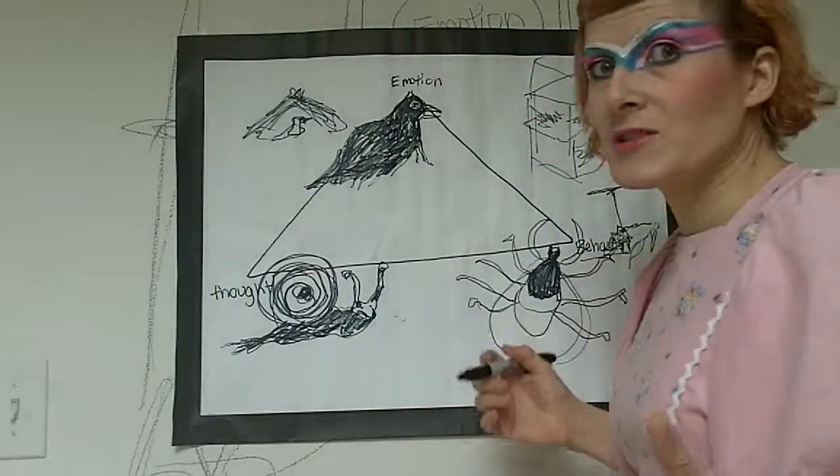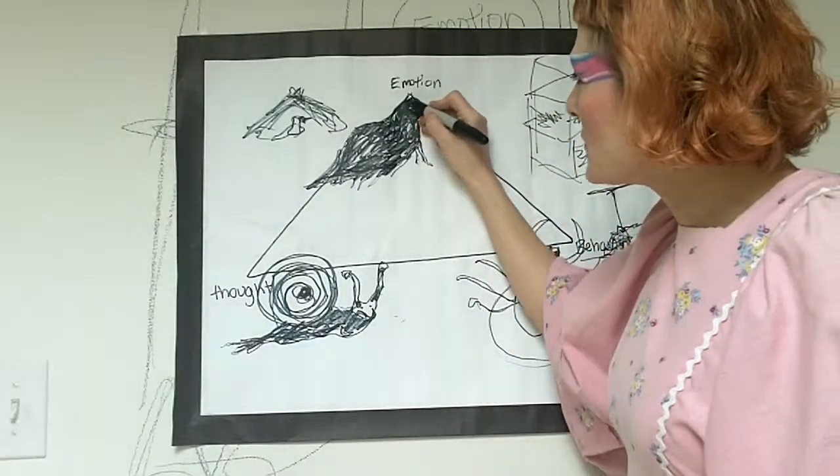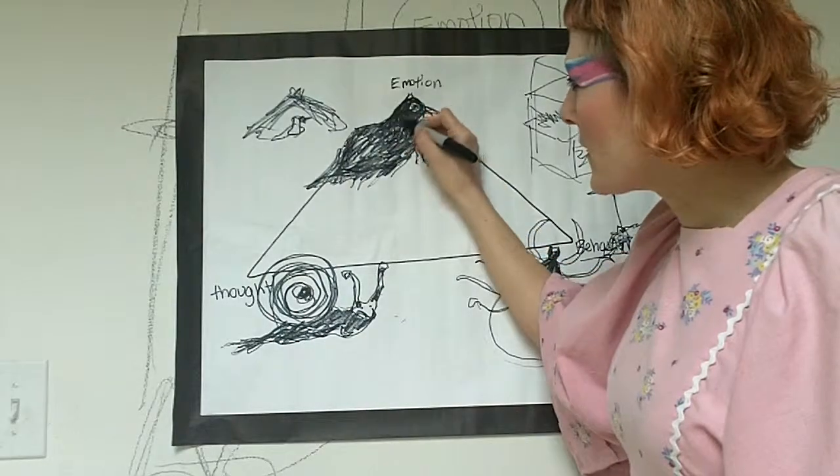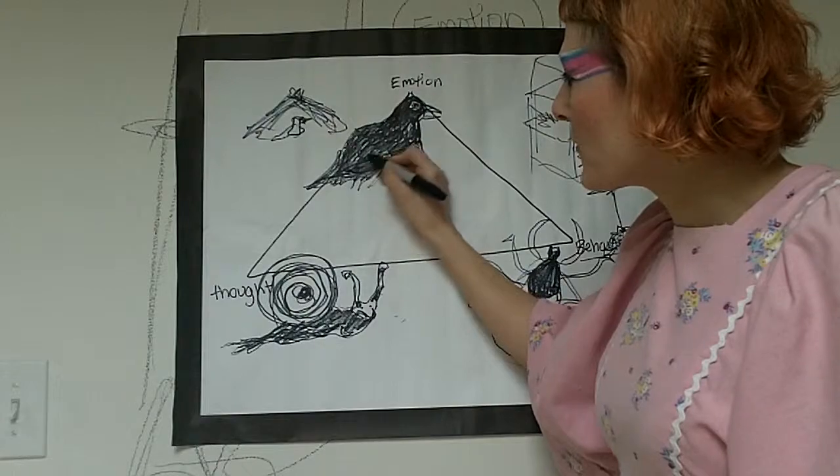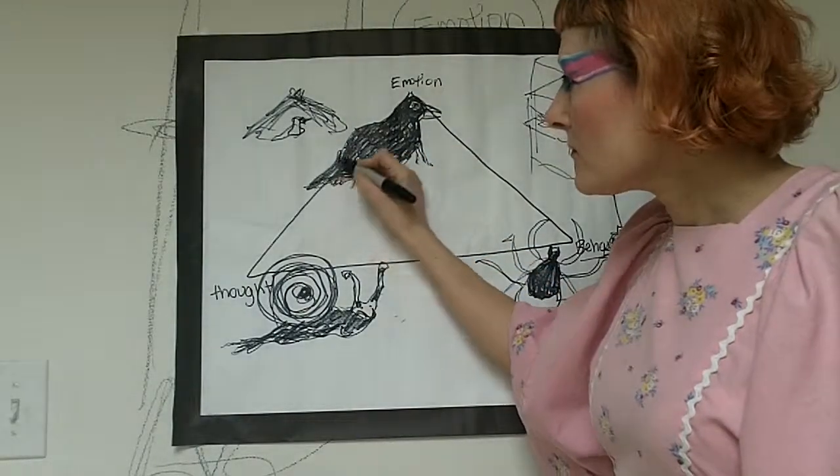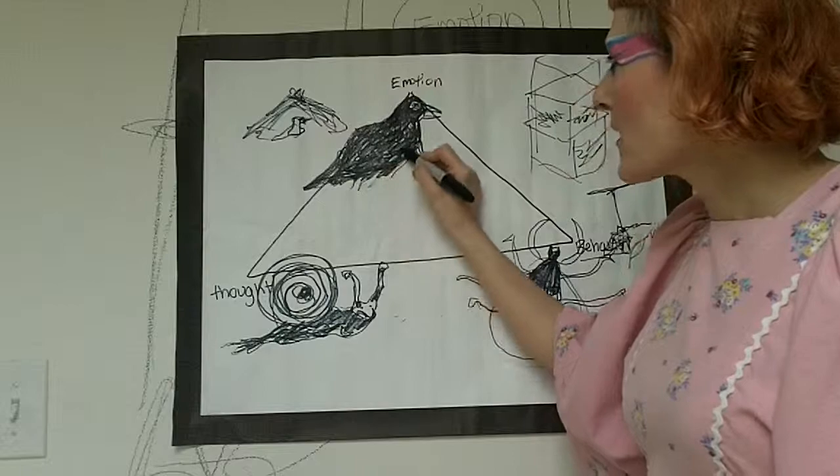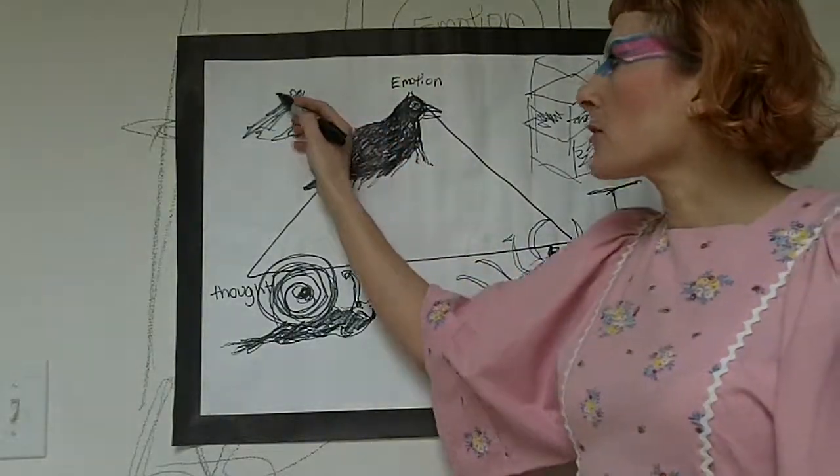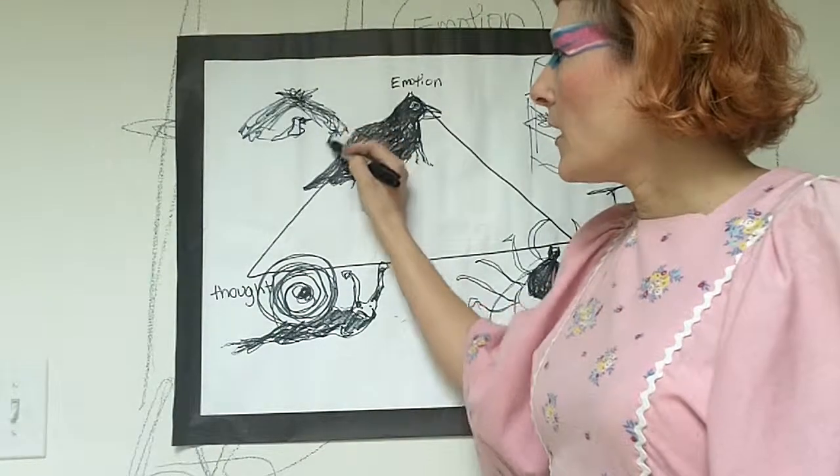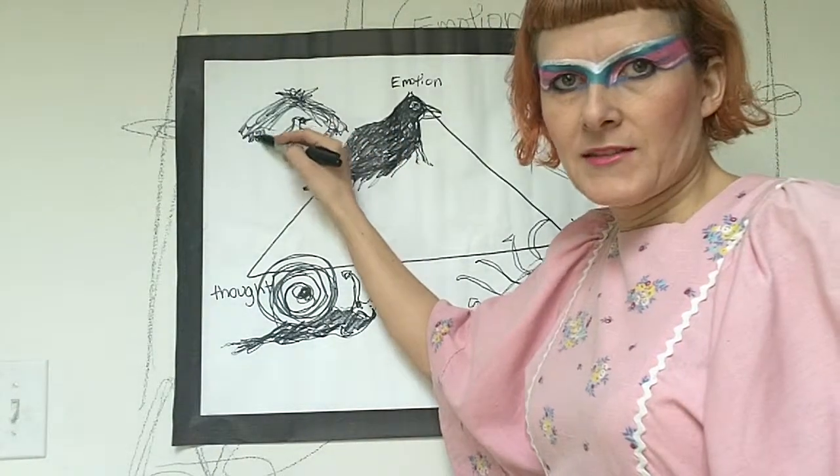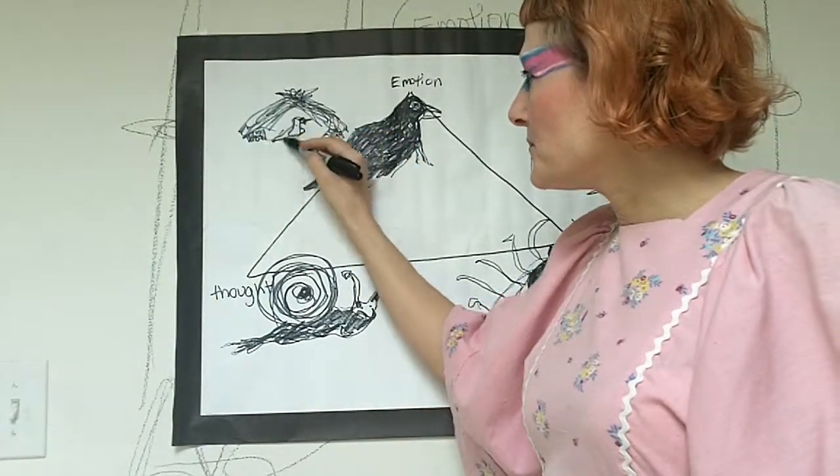I chose three different animals to talk about. I chose the bowerbird from Australia, considered the artists and architects of the bird world. First of all, the bower, sometimes they create these thatched bowers, which is just a mating place for the bird.